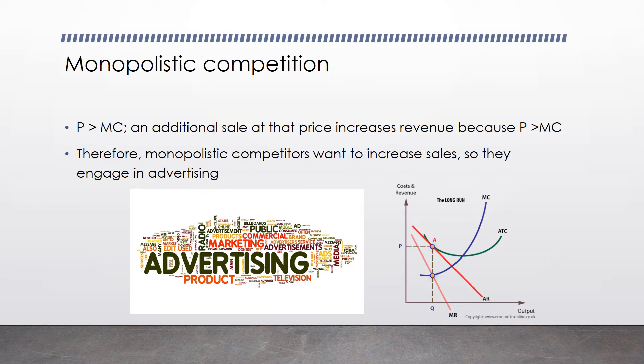However, a monopolistically competitive firm charges a price that is greater than marginal cost. Because of that, an additional sale at the price increases revenue, since price is greater than marginal cost. Therefore, monopolistically competitive firms want to increase sales, so they engage in advertising. Perfectly competitive firms really don't engage in advertising because they charge a price equal to marginal cost — they become indifferent to that one more unit sold in long run equilibrium.